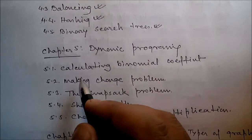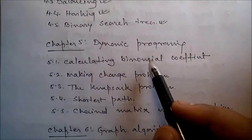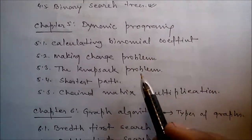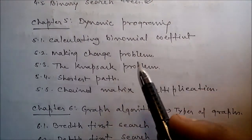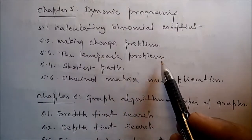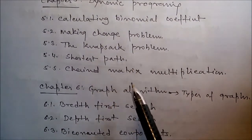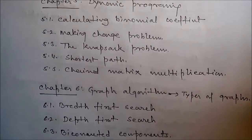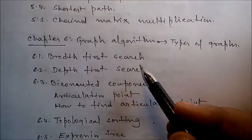In Chapter 5, we'll talk about dynamic programming. We'll cover calculating the binomial coefficient, the making change problem, the knapsack problem, the shortest path, and chain matrix multiplication.